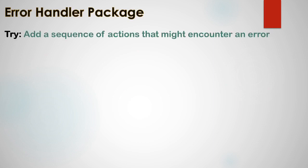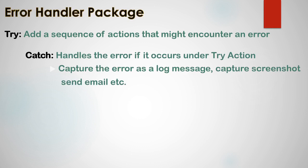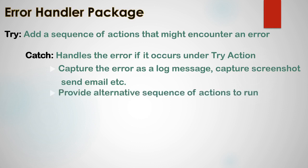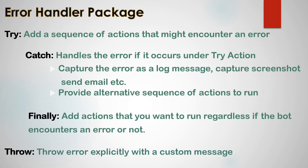Let's see what all actions we have inside the error handler package. First we have the try block where we can add a sequence of actions that might encounter an error. Then we have the catch block which handles the error if it occurs under the try block. The error can be captured as a log message, we can capture a screenshot, we can send emails, and we can provide alternative sequence of actions to run within the catch block. Next we have the finally block which adds actions that you want to run regardless of whether the bot encounters an error or not. So no matter if an error occurs or not, the actions under the finally block will be executed every time. Things such as closing the application or closing Excel files come under the finally block. At the end we have the throw action which throws an error explicitly with a custom message.